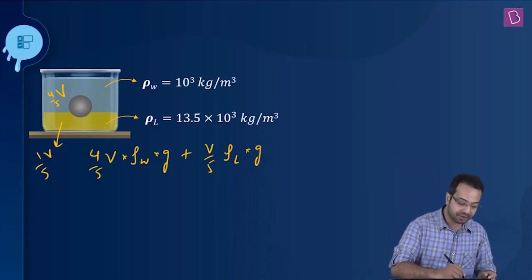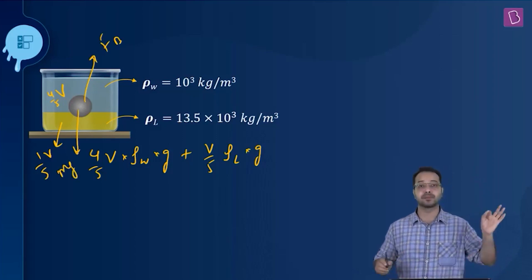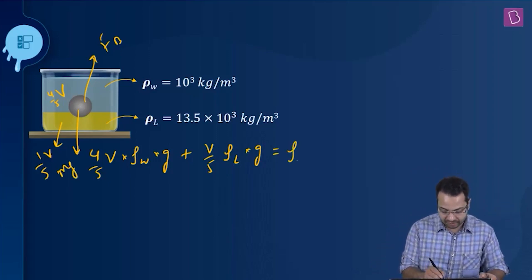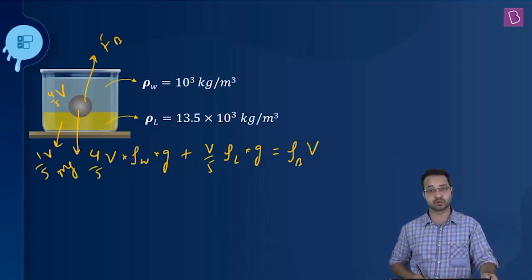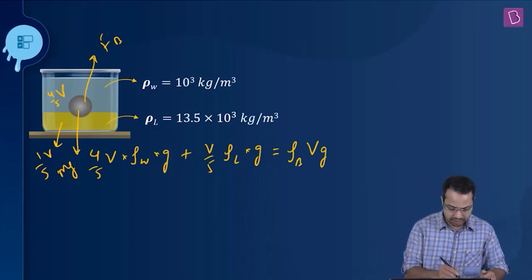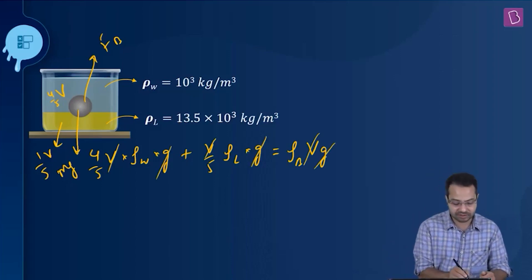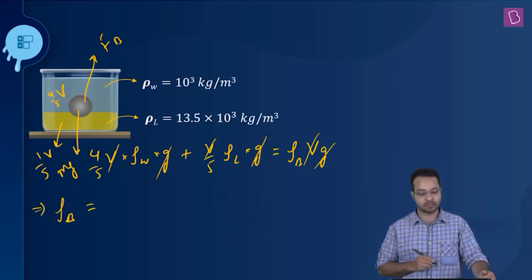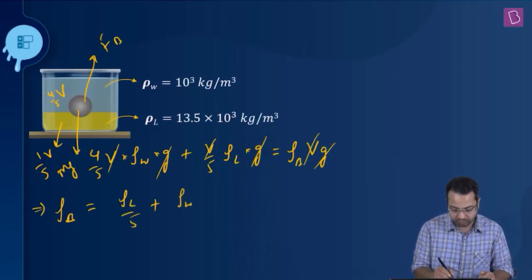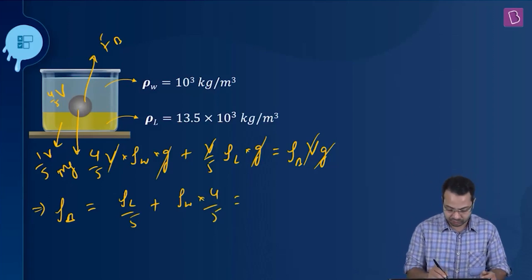The total buoyant force supports the weight of the object. The weight of the object is ρ_b × V × g. Cancelling V and g from both sides, we get: ρ_b = ρ_liquid/5 + ρ_water × (4/5). Substituting ρ_liquid = 13.5 × 10³ kg/m³, this becomes (13.5 × 10³)/5 + 10³ × (4/5).